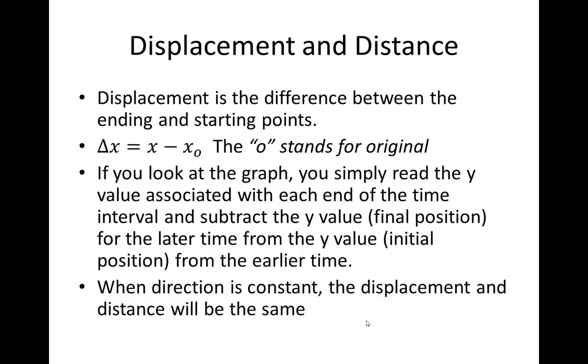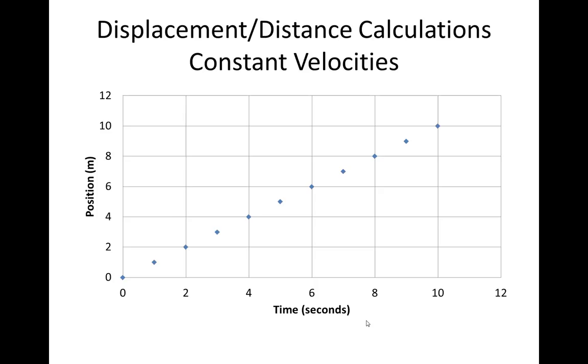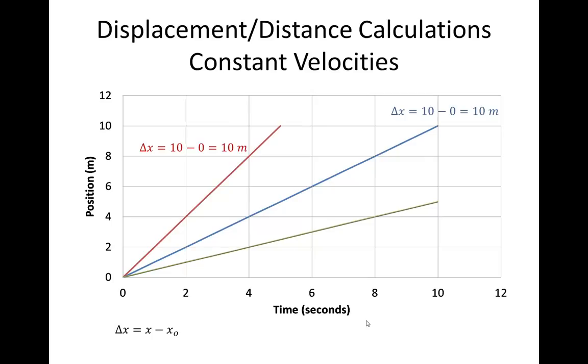Whenever the direction is constant, displacement and distance will be the same. So let's look at those three points. You've got the first displacement is 10 meters, second displacement is 10 meters, and the last displacement is 5 meters. If it were from 10 to 0, then it would be a negative 10 meters. So you can have both positive and negative displacements, but only positive distances.